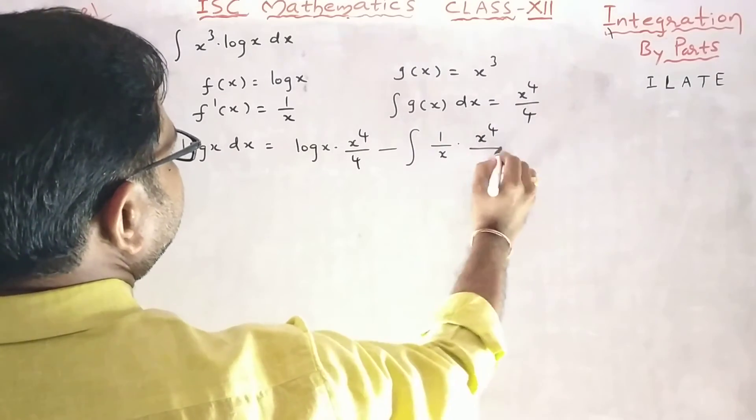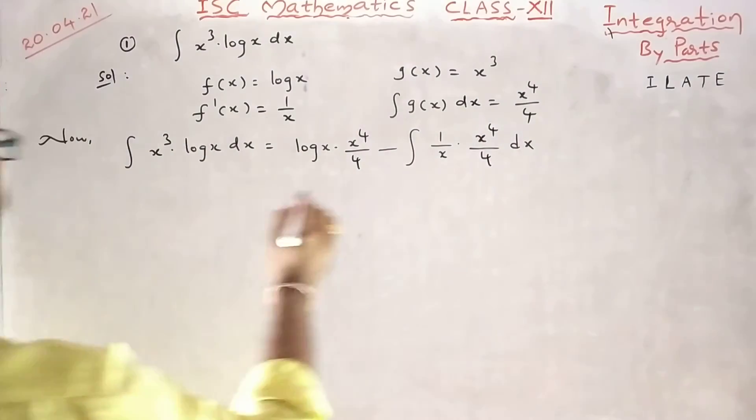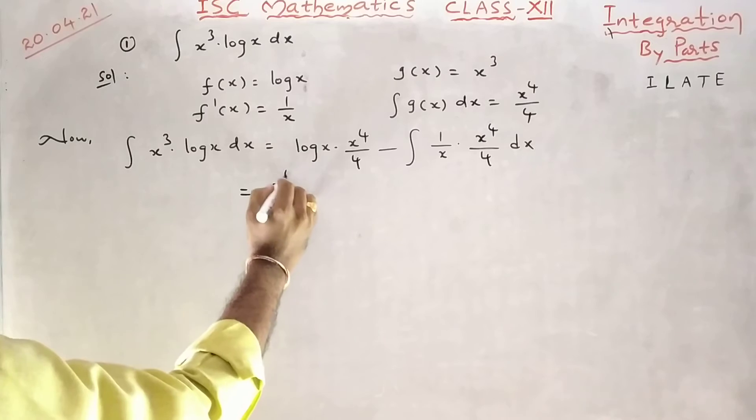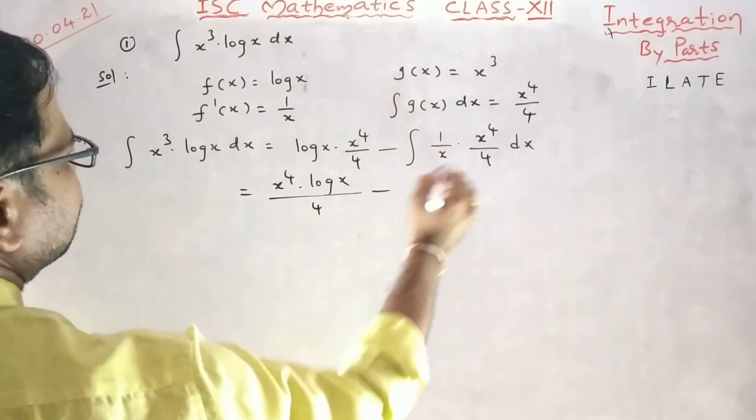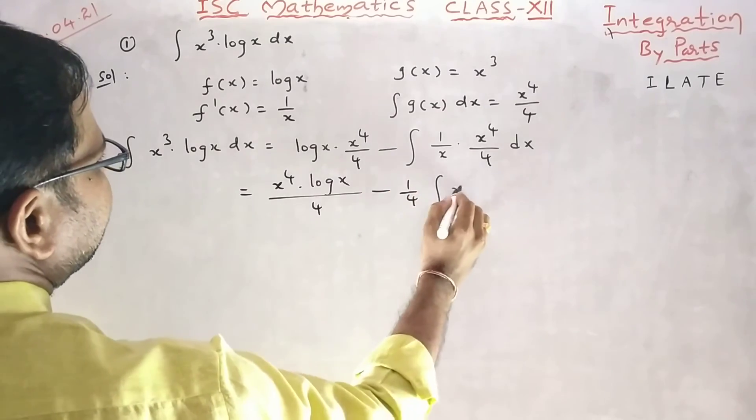integral of second function whole dx. So x power 4 log x upon 4 minus 1 by 4 integral, here 1 by x cancel, x cube dx.